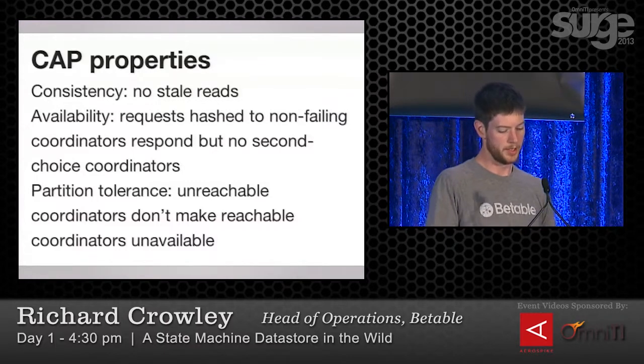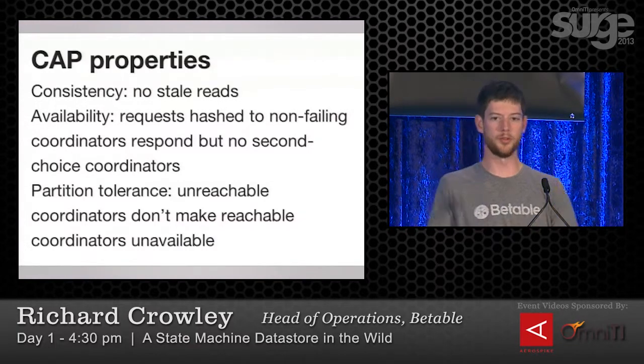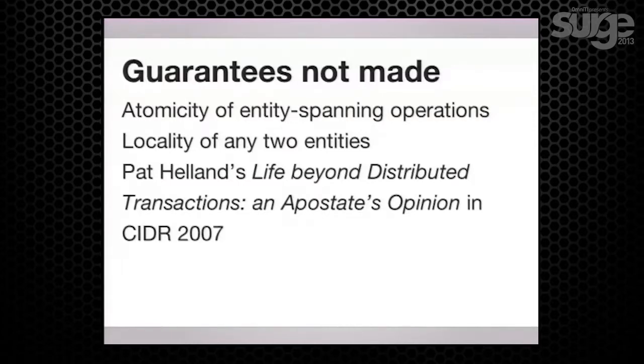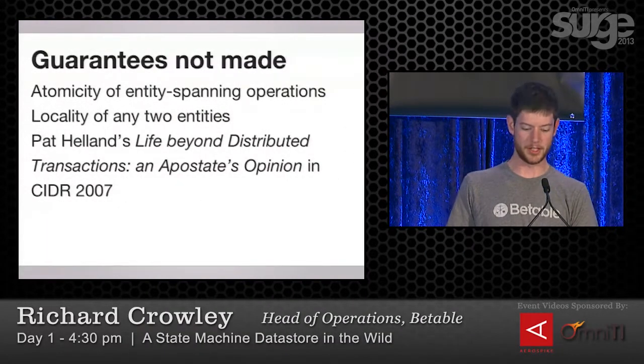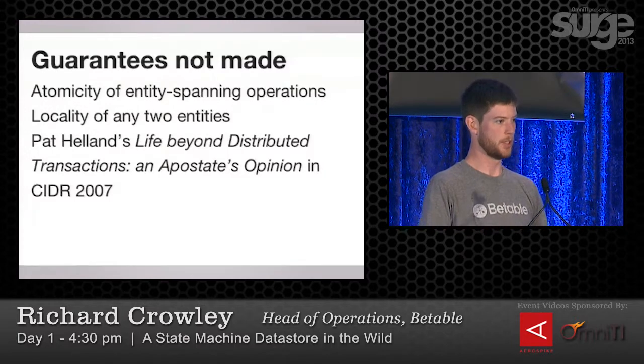For CAP, since we want this to be a distributed system, we favor consistency — there are no stale reads in this system, period. That comes at the cost of availability. The strict definition from Brewer is that requests to a non-failing node succeed, and that is true — if you send a request to a non-failing coordinator it will succeed. But entities coordinated by a node that is down will fail — they're just unavailable. That's a dissatisfying part of the system right now, but not intractable to fix. In terms of partition tolerance, the same story: if you can get to the coordinator of the entity you're after, you're good to go.